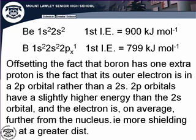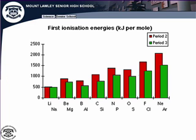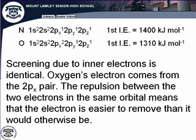There is another anomaly between nitrogen and oxygen. You would expect oxygen to be higher because it has a more positive nuclear charge, but it is actually lower. Both nitrogen and oxygen have the same screening since their outer electrons both go into 2p orbitals with no extra electrons between them and the nucleus. The difference is that oxygen's electron is removed from a paired pair in the 2p x orbital — there's a little repulsion between those paired electrons, making it slightly easier to remove.